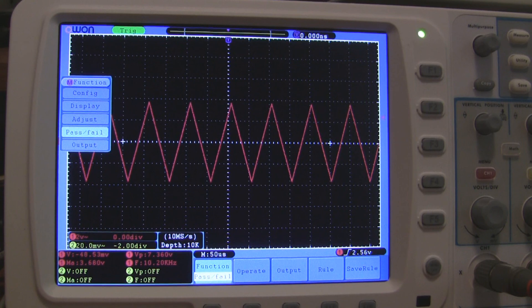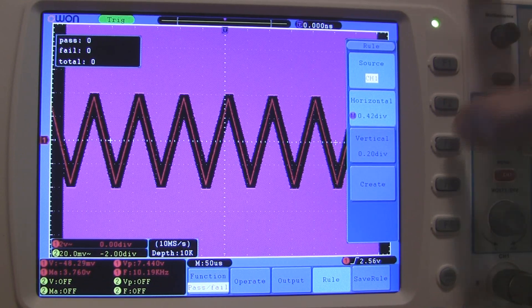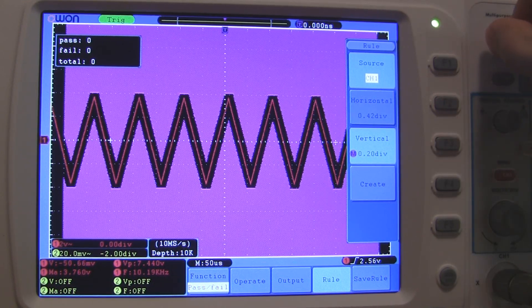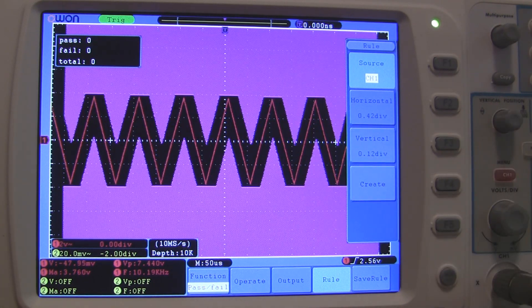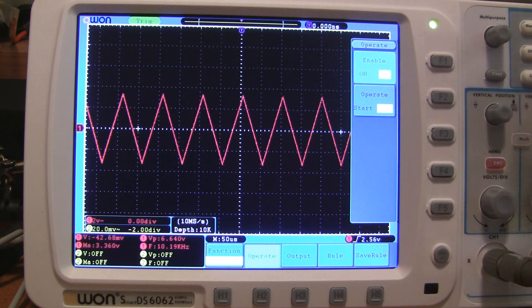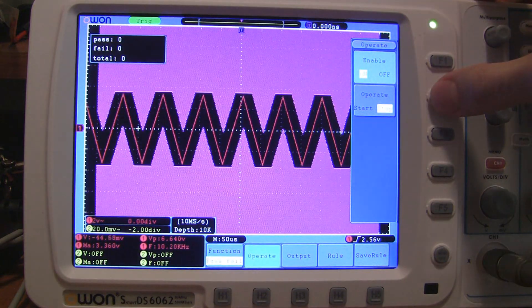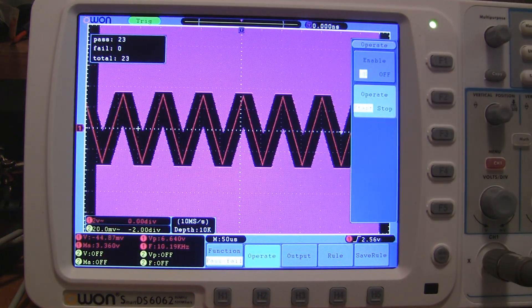So let's say I've designed a DC power supply that's supposed to put out a certain voltage and only have a certain amount of noise on the output. I'm going to use this triangle wave as a simulated example for the noise. I can go into the settings of the mask and change the acceptable tolerances of the waveform. Then I can enable the pass-fail function, and the oscilloscope will alert me if the voltages go outside the specified range.